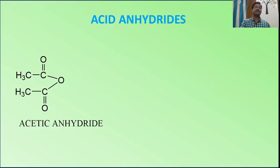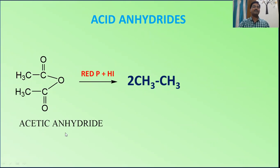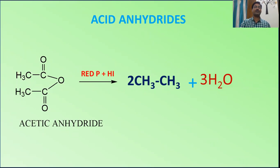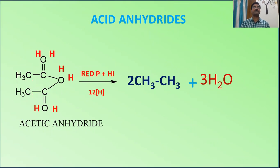For acid anhydrides — acetic anhydride, or ethanoic anhydride — when treated with the reagent, it converts into two molecules of ethane. There are three oxygens which convert into three water molecules. Two hydrogens for each oxygen (totaling six) plus three for each carbon (totaling six) — overall twelve hydrogens are required.